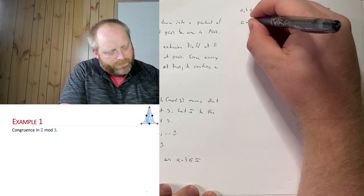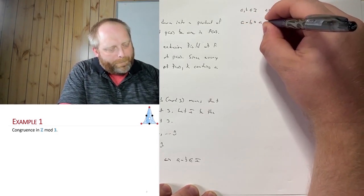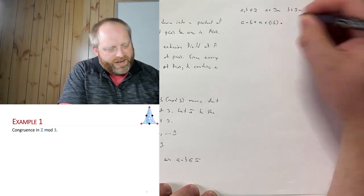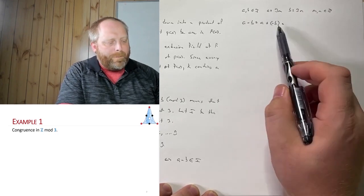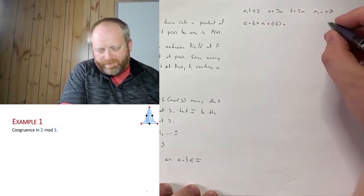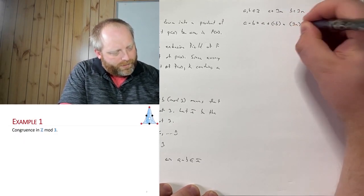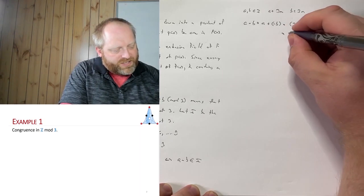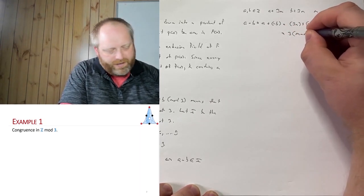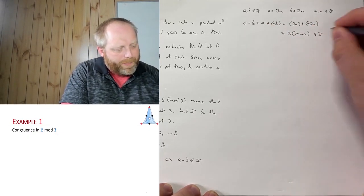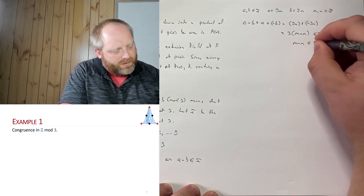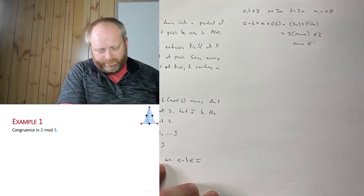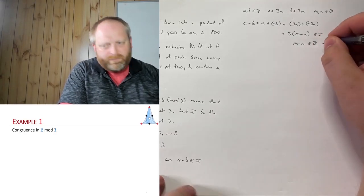Looking at A minus B: substituting in, we get 3M plus (minus 3N), which we can rewrite as 3 times (M minus N). This is an element of I because M minus N is an element of Z. So we've shown closure under subtraction.